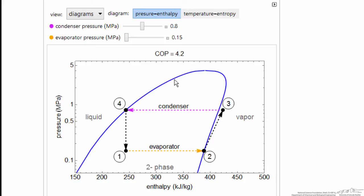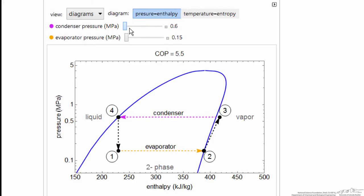This is on a pressure-entropy diagram. The interactive simulation allows us to change the high pressure and observe the effect on the coefficient of performance.